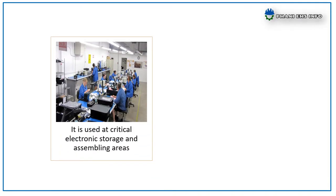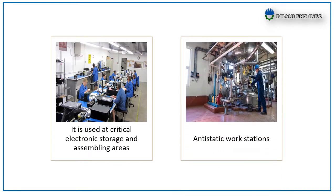Where to use it: It is used at critical electronic storages and assembling areas, anti-static workstations. It can also be used for plastic, paper, textile, food, explosives, and pharmaceutical industries. How to check: Replace the 9-volt battery if 'Low Battery' displays caution.